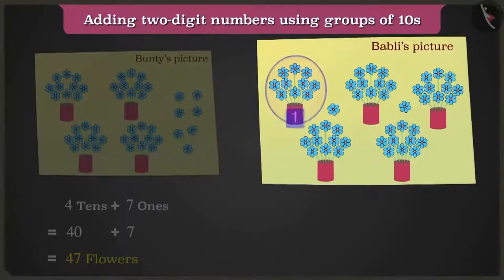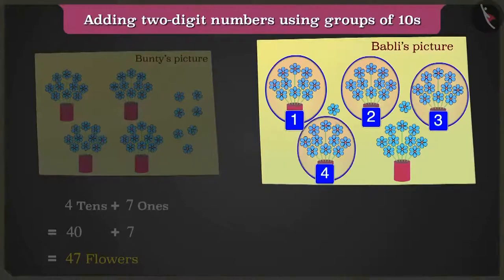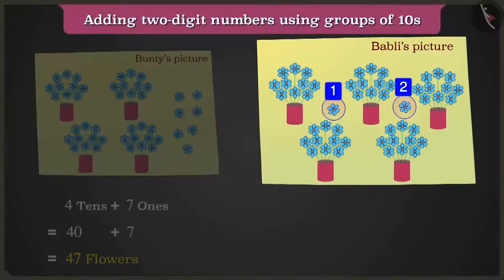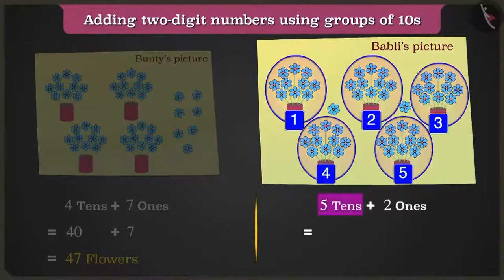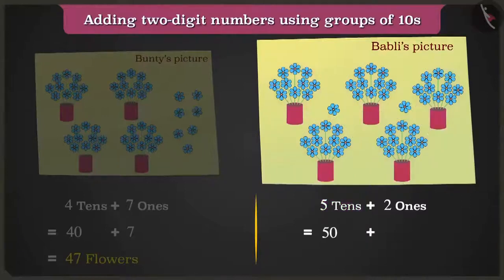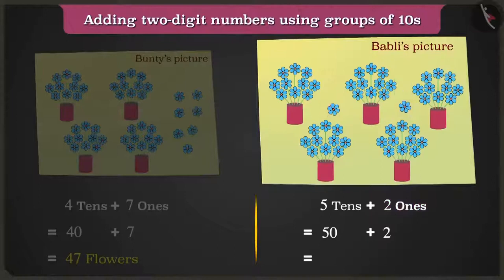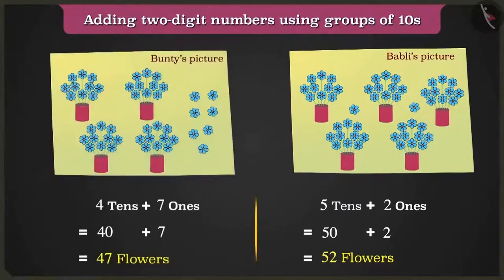Bubbly's drawing paper has one, two, three, four and five flower pots of ten flowers each and two loose ones. So here, there are five tens that are fifty and two ones that are two. Fifty and two in total, fifty-two flowers. To find out the total number of flowers, we will write their number in the table of tens and ones.